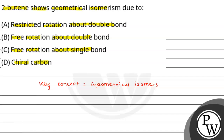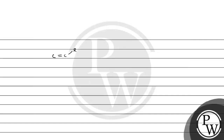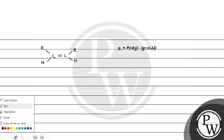We know about structural isomerism. For example, let me try with a cis compound. Suppose we have C double bond C, here suppose is R, here suppose is H — where R is an alkyl group. This is the cis compound. So what does it actually contain? It actually contains a pi bond.